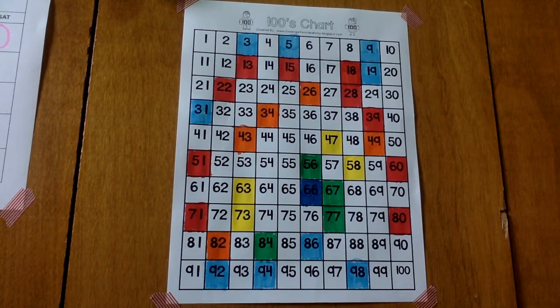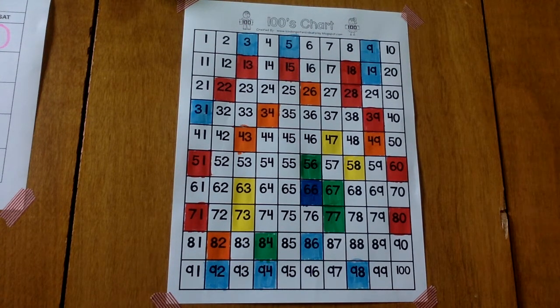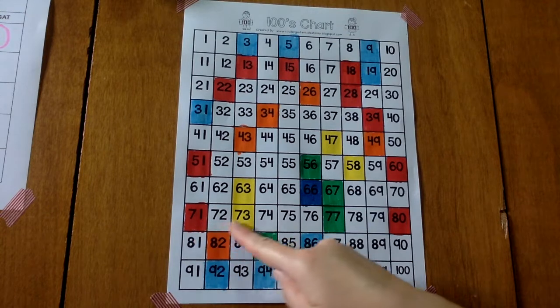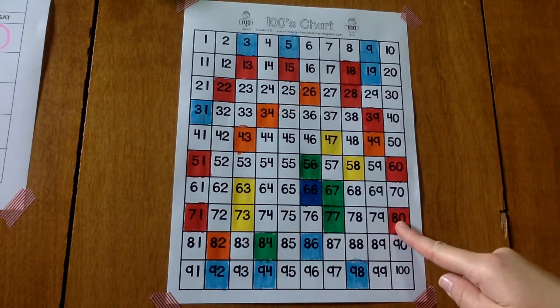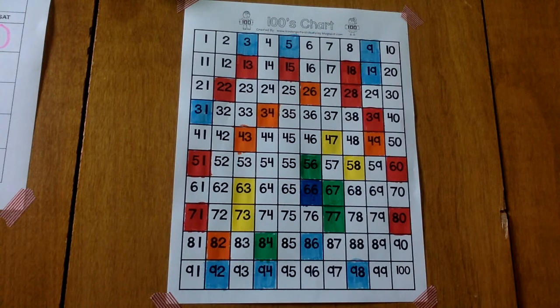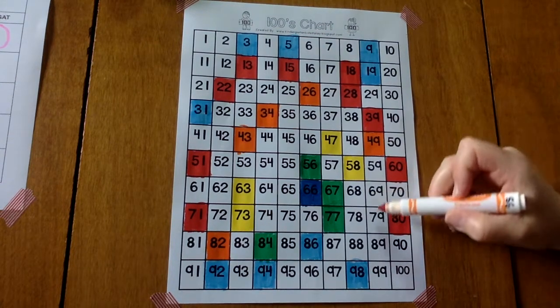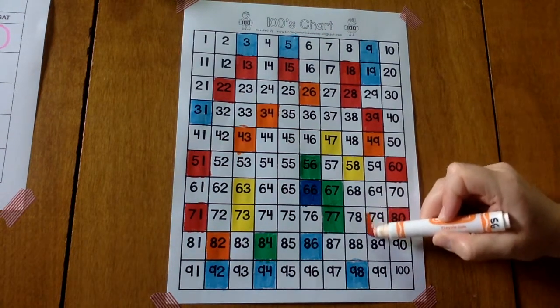Next number, 79. Finishes out the 70s row. 79 and then 80. 79 is a 7 and a 9. We're coloring it orange.